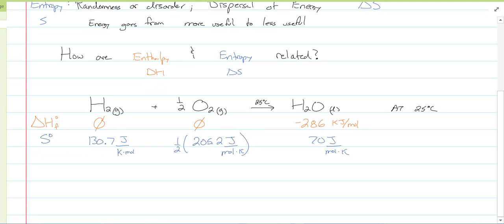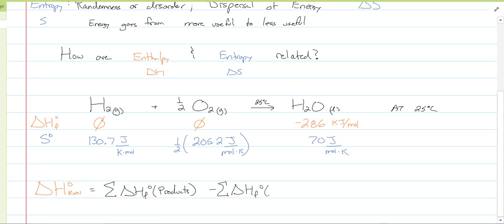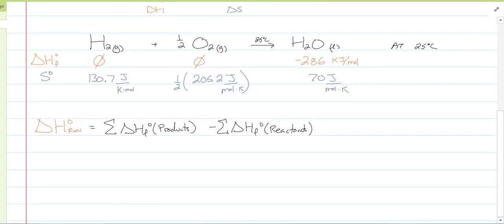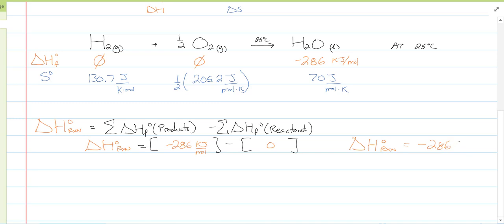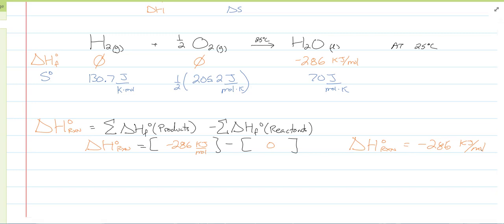Calculating ΔH° of the reaction: this equals the sum of ΔHf° of products minus the sum of ΔHf° of reactants. Plugging in our numbers, ΔH° of the reaction equals products minus reactants. Products is negative 286 minus zero, therefore our ΔH of this reaction — which we also call the heat of combustion — is negative 286 kJ/mol. That's how much heat is transferred when one mole of hydrogen and half a mole of oxygen burn to make one mole of water.